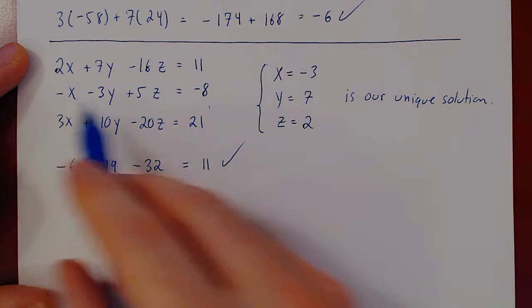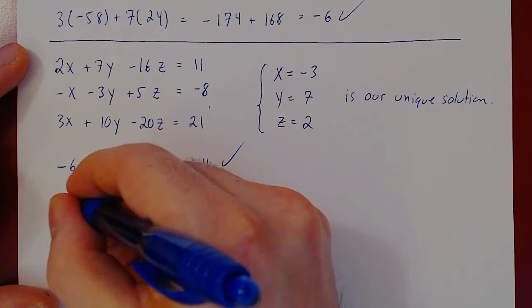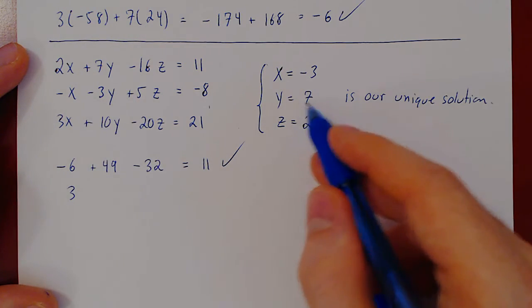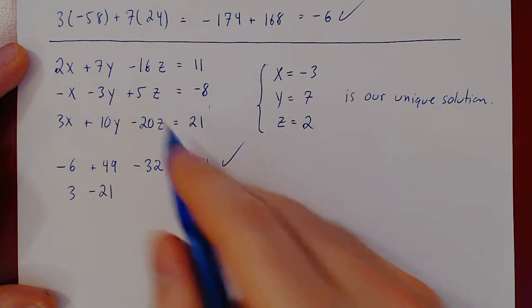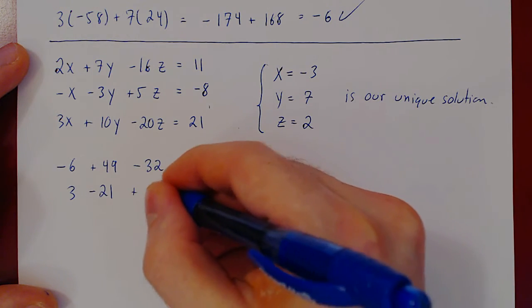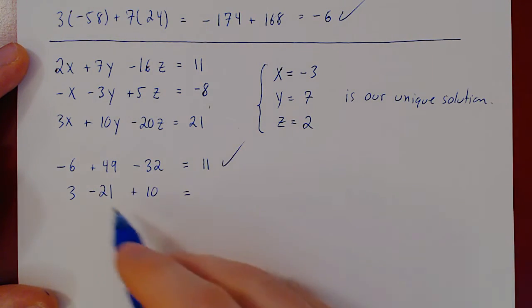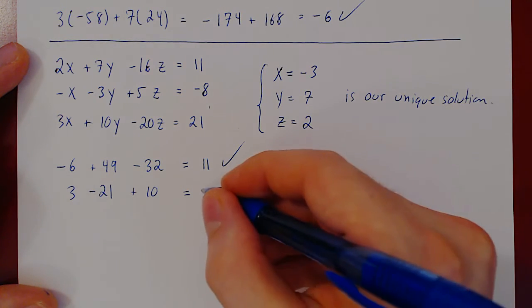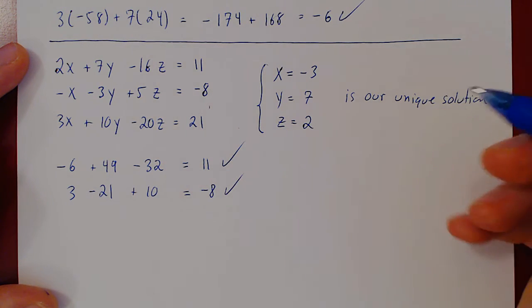Second equation, negative x is positive 3. Negative 3 times 7, negative 21, plus 5 times z, plus 10, equals. Negative 21 plus 3, negative 18, plus 8, negative 8. So far so good.